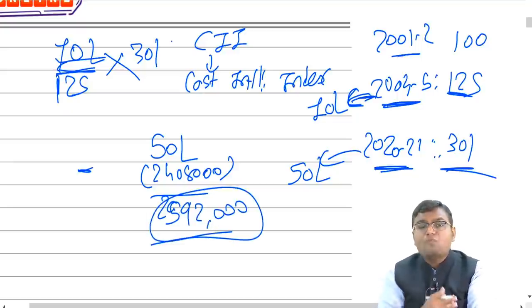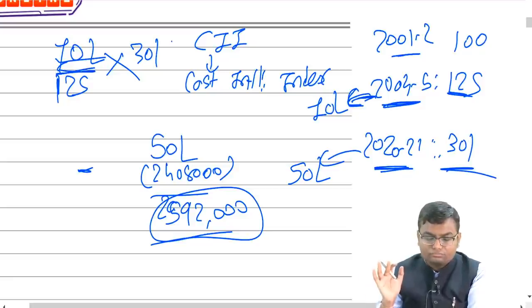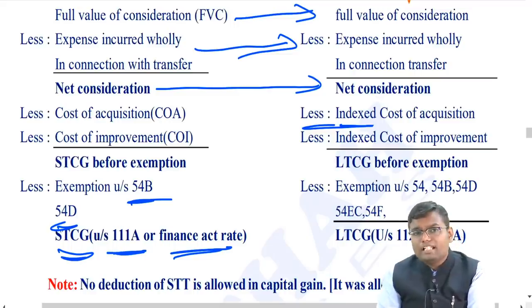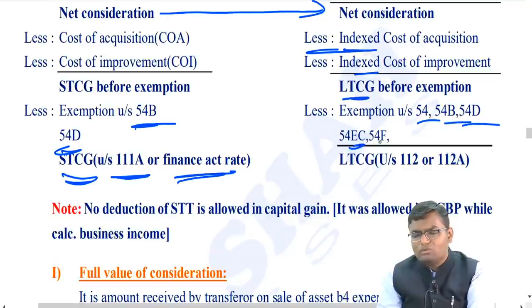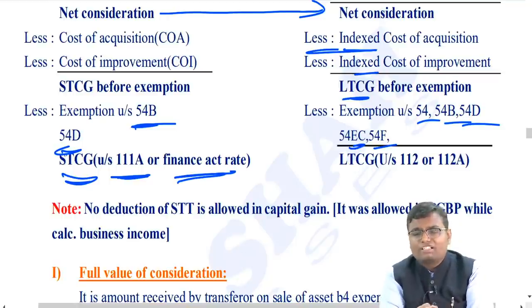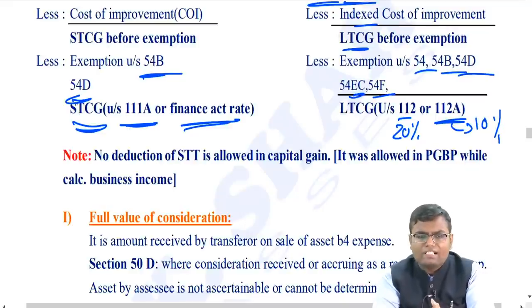Similarly, indexation is applied to cost of improvement. From LTCG, four exemptions are available: Sections 54, 54B, 54D, 54EC, and 54F. The balance is taxable at 20% under Section 112, or 10% above Rs. 1 lakh under Section 112A for listed shares. Security Transaction Tax (STT) is never allowed as a deduction for investors computing capital gain, though it is allowed for traders under PGBP.